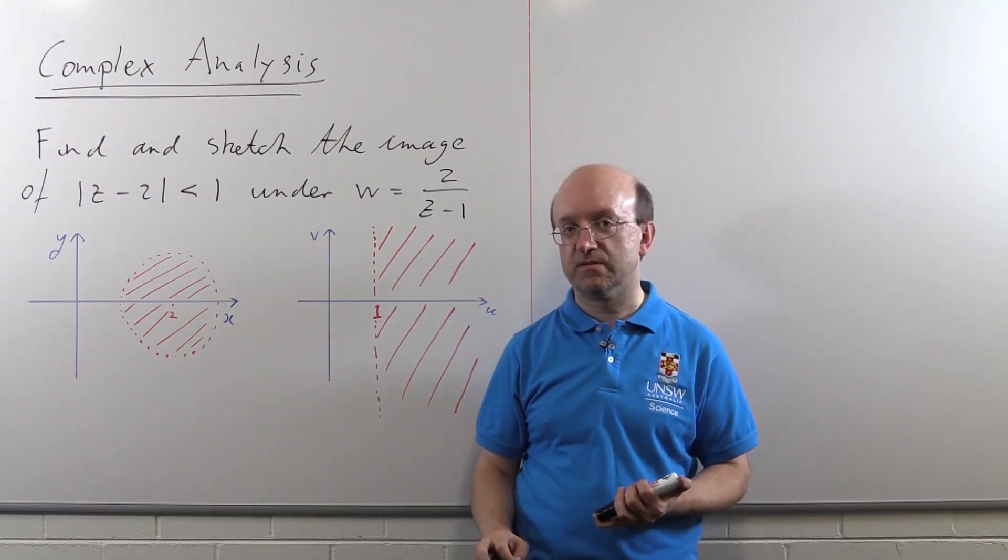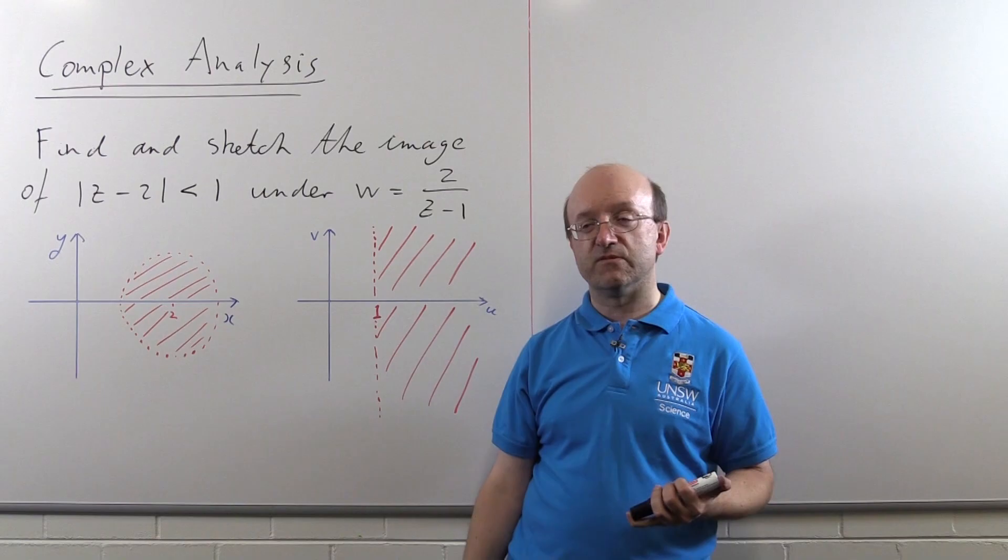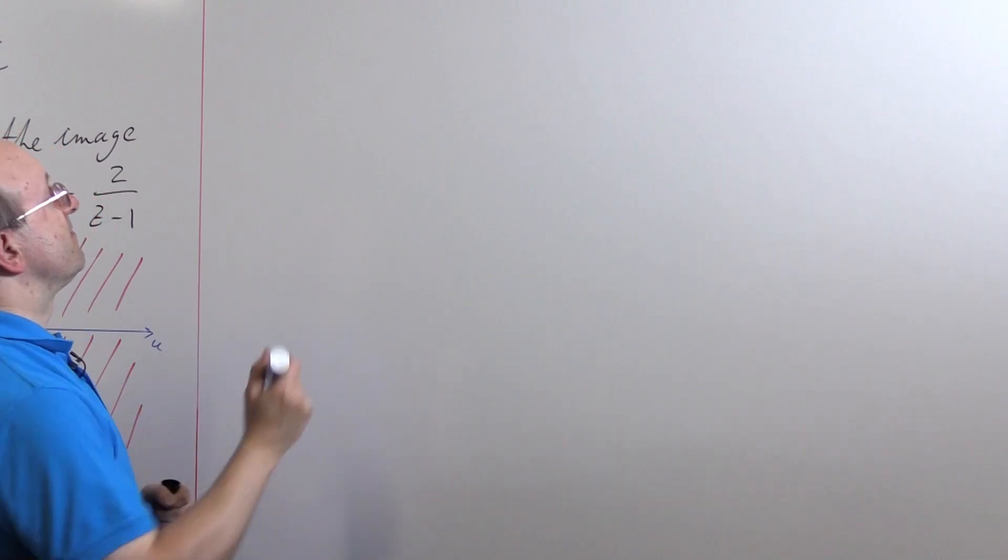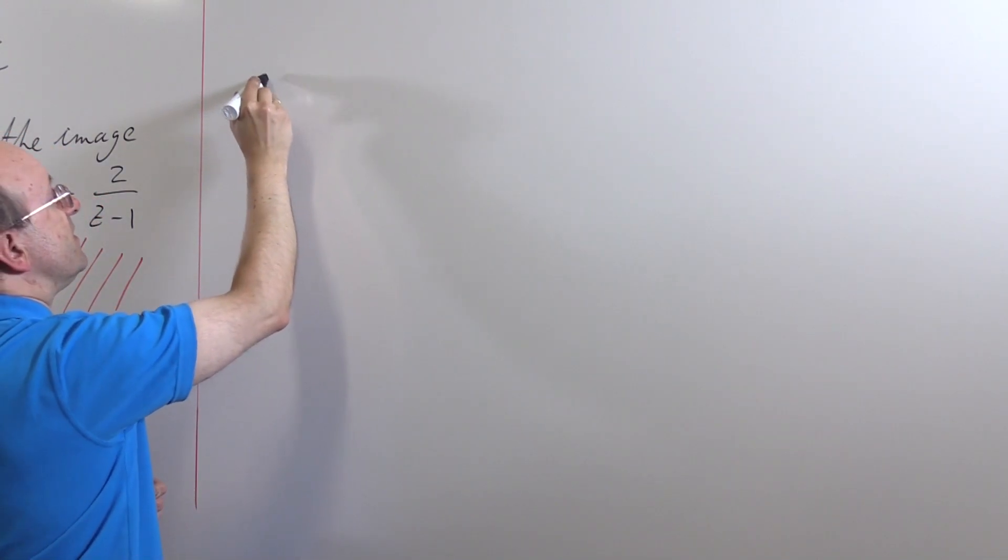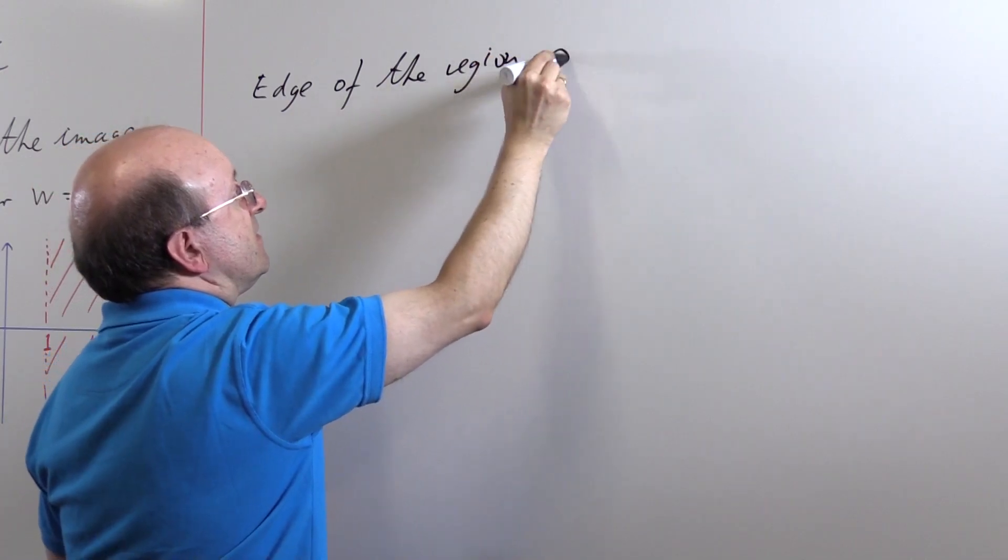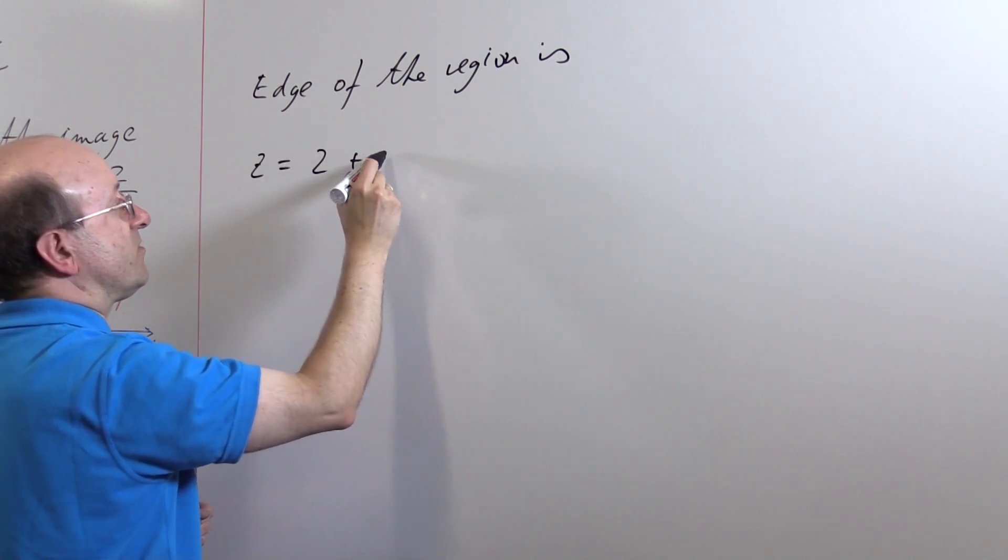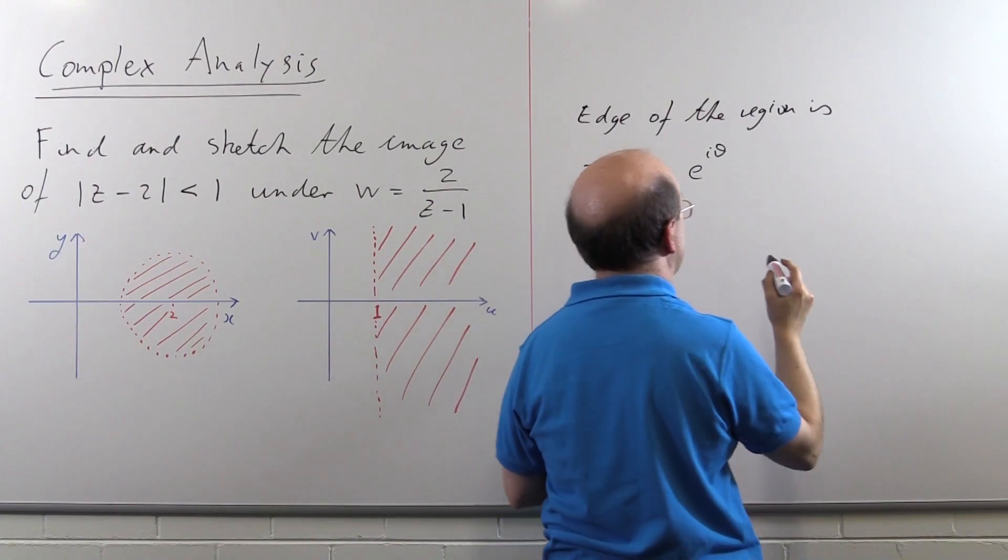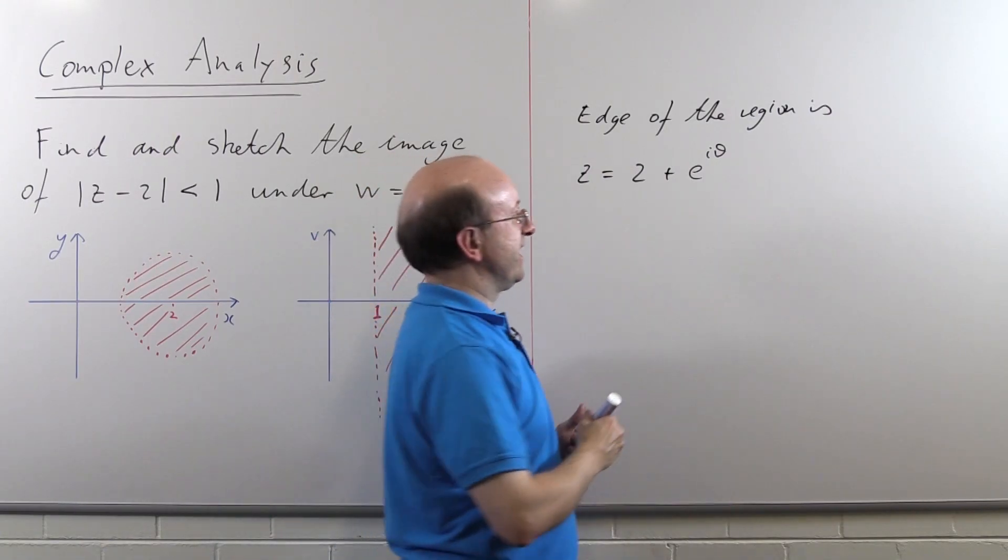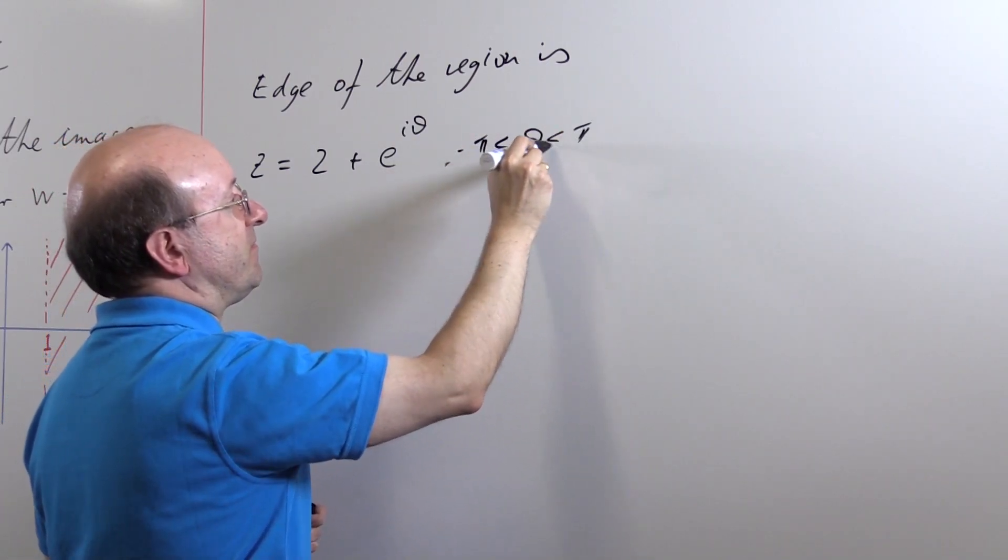So what we want to do is parameterise that circle and then just put that formula, that function, into 2/(z - 1). And then try and make sense of what we get out at the end. Alright, so parameterise the edge. The edge of the region is given by z is, well, the centre is at 2 and its radius is 1. So 2 plus e^(iθ) for, well, θ is to vary over some region of length 2π. And, for reasons to become apparent when I get to the end, I'm going to pick minus π to π.